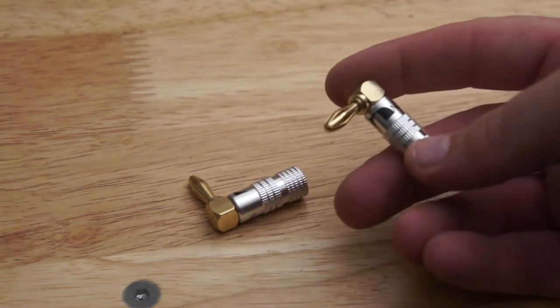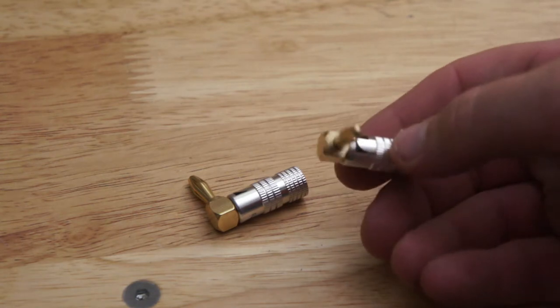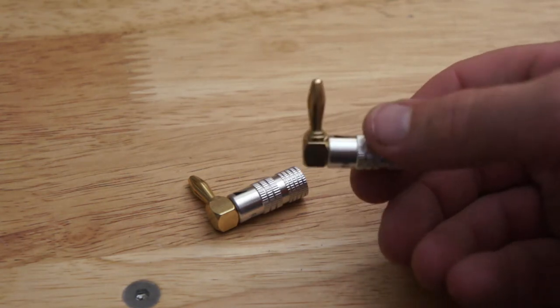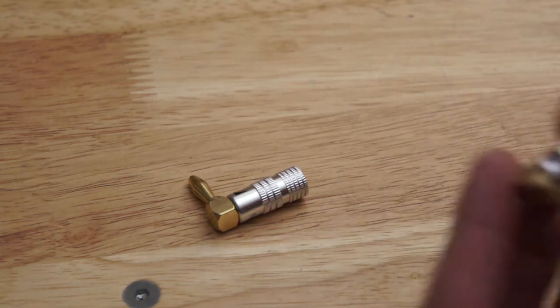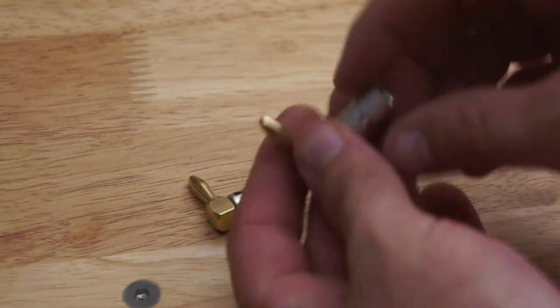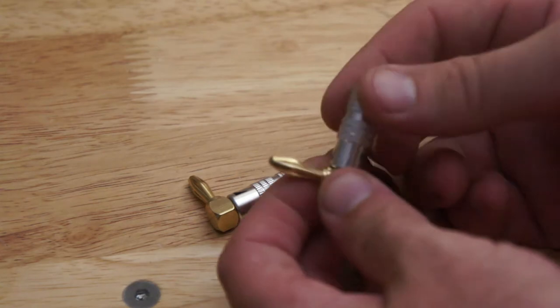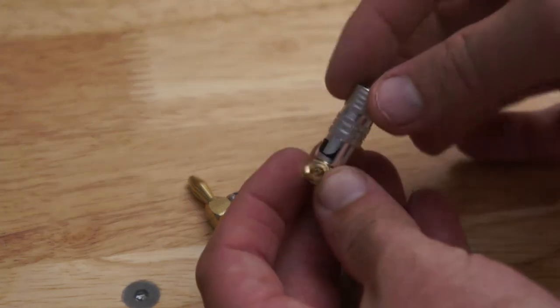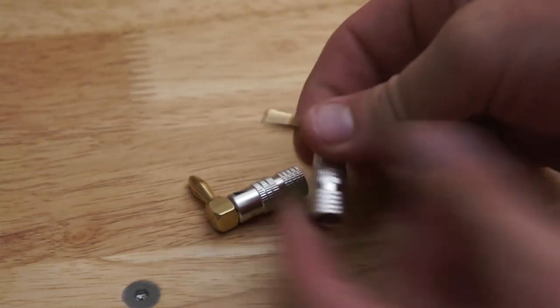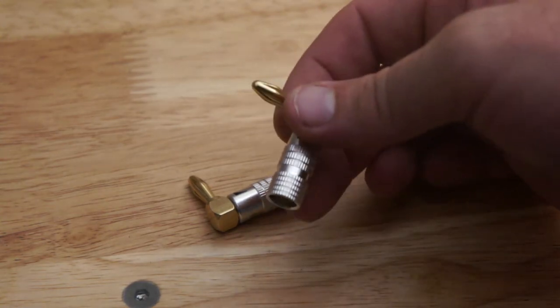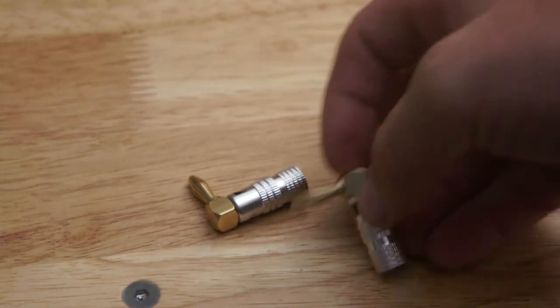Instead of undoing those really fiddly speaker posts on the back of your amplifier, you know the red and black ones you're trying to tighten up, you can just plug this in if your amplifier or AV receiver has a plug input. Very quick for swapping speakers over or unplugging and re-plugging speaker cables.